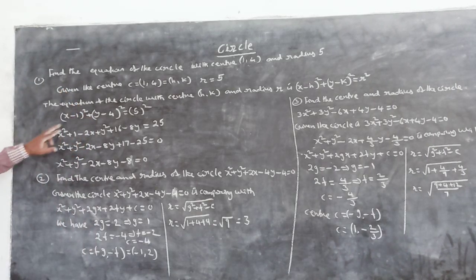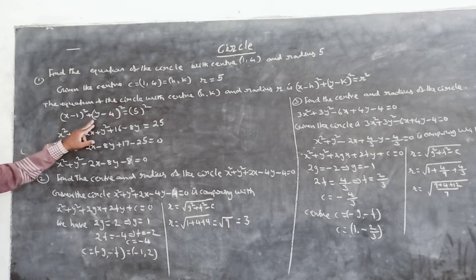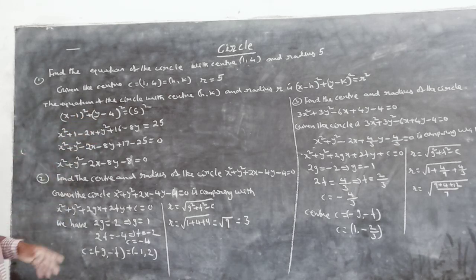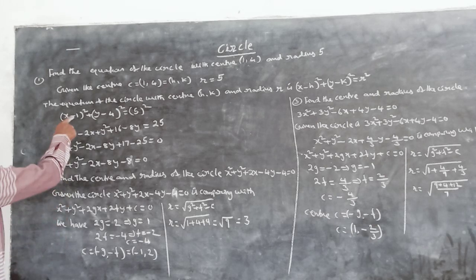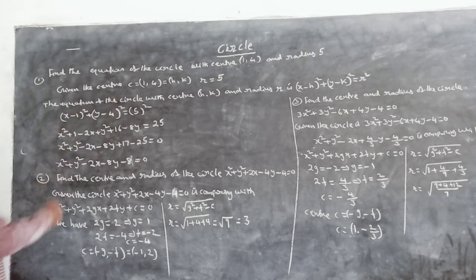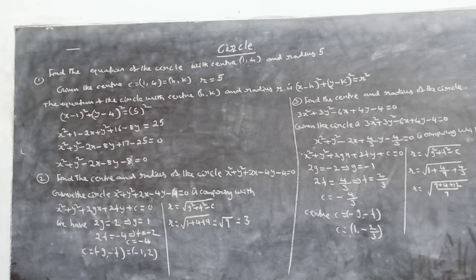Substituting h equal to 1 and k equal to 4: x minus 1 whole square plus y minus 4 whole square is equal to 5 squared. Using the identity: a minus b whole square is equal to a square plus b square minus 2ab.